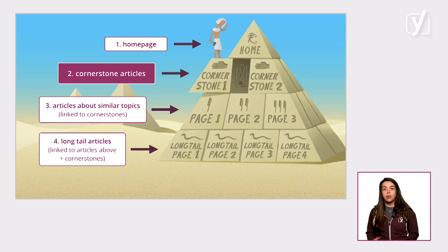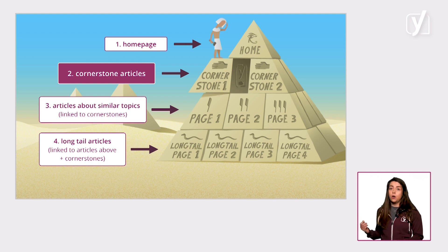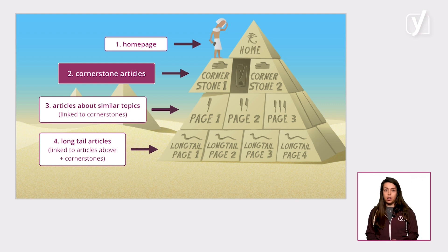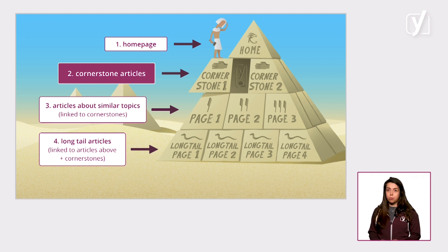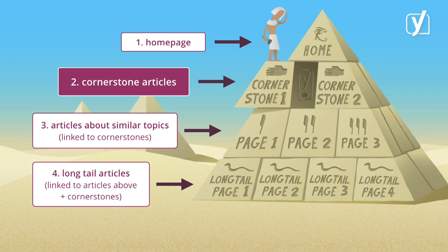So where should cornerstone content be on your site? We like to think of a site as a pyramid. The homepage is on top, important articles are just below, and regular blog posts make up the basis of the pyramid. Cornerstone articles should appear very high in your site's pyramid. Ideally, someone would be able to click from your homepage to your cornerstone articles instantly. You should link all your other posts about similar topics to that particular article, as this internal linking structure will increase the chances of ranking in Google with your cornerstone content article.